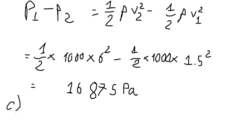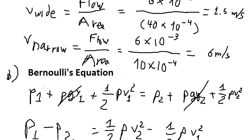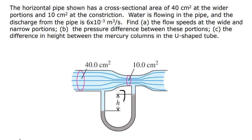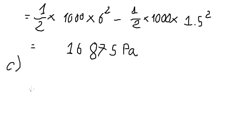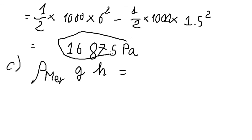Now let's go to question C. We want to find the difference here. So the formula in this situation, we have density of mercury and we have gh equals to this value here.